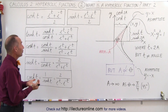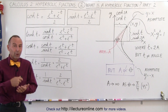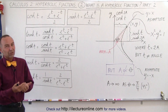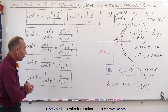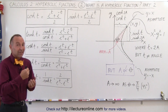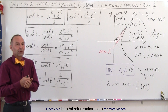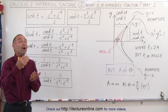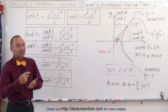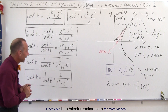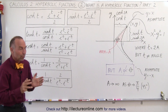Of course, what makes it confusing is that we do use the sine, the cosine, the tangent, the cotangent, the secant, and the cosecant with an H behind it, just turning them into hyperbolic sine and cosine, tangent and cotangent, and secant and cosecant.